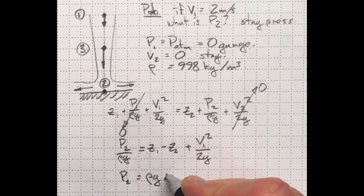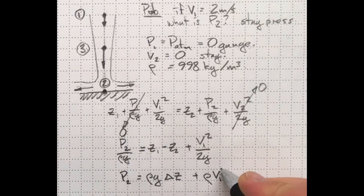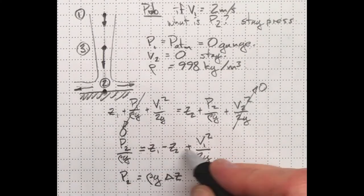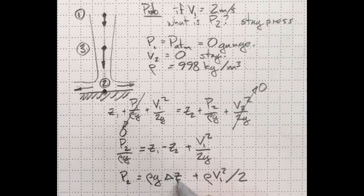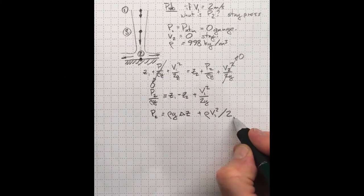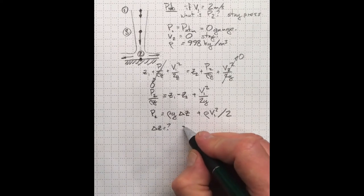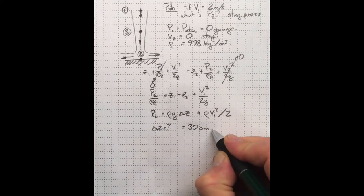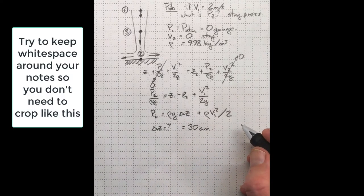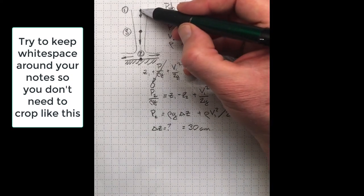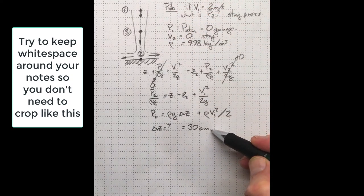Taking the density and gravity across, we'll wind up with rho g times the difference in elevation plus rho v1 squared over 2. We didn't have the elevation change specified, but if this was coming out of a sink tap and hitting the bottom of a sink, 30 centimeters might be a reasonable elevation to consider.